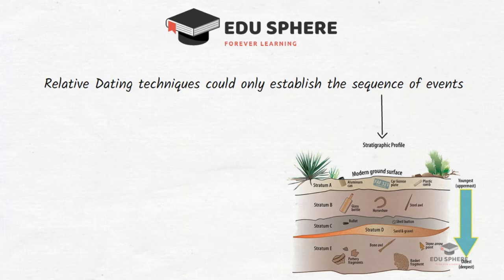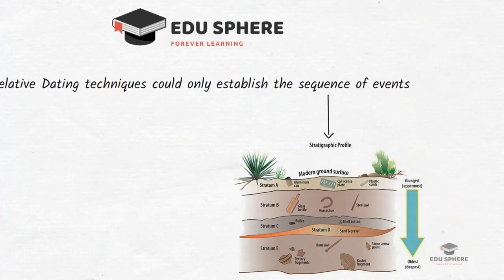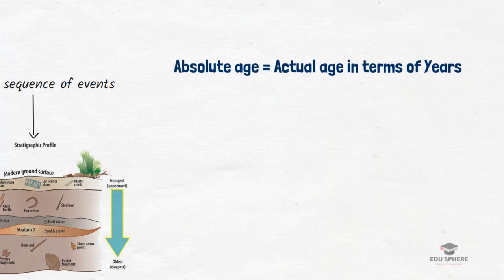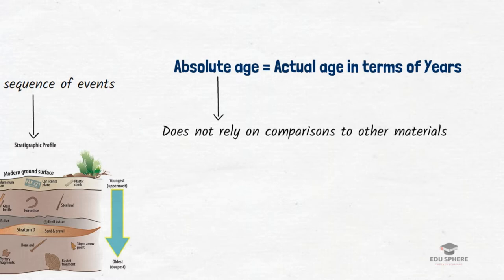This is why modern scientists have developed different methods to determine the absolute age of materials. The absolute age of an object is a measure of how old it actually is in terms of years. This is much more desirable when constructing the timeline of our planet because it does not rely on comparisons to other materials. Instead of saying an object is older or younger than something else, scientists can simply report the age in years.